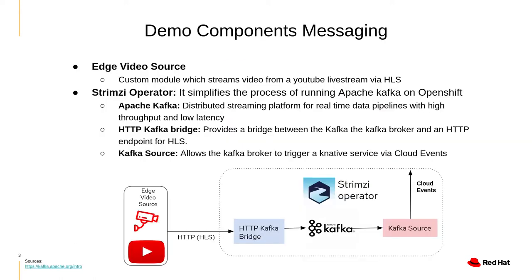So we're going to go into the different main components of our demo. The first was the messaging component. For our main core messaging, we used Apache Kafka, which is a great distributed streaming platform that provides high throughput and low latency. We deployed it to our OpenShift cluster using the Strimzy operator, which made it really easy and seamless.